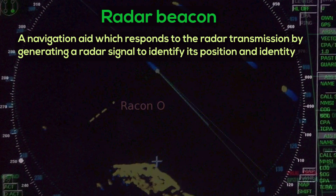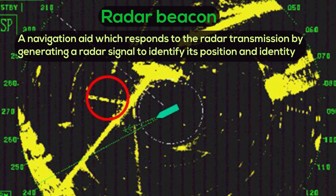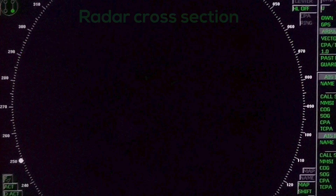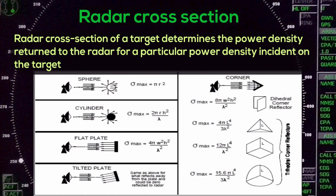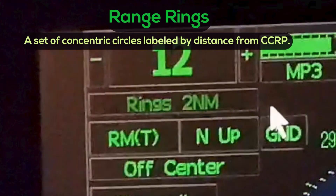Radar Beacon. Radar Cross Section: the radar cross section of a target determines the power density returned to the radar for a particular power density incident on the target. Range Rings: a set of concentric circles labeled by distance from the center of the radar field.